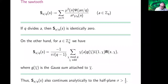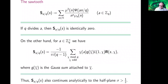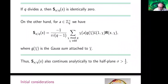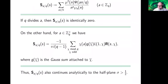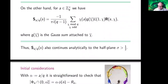Since each of these functions continues to the half-plane sigma bigger than a half, we know that the sawtooth also continues to that half-plane. I'll try to show how this function rears its ugly head in all of this.